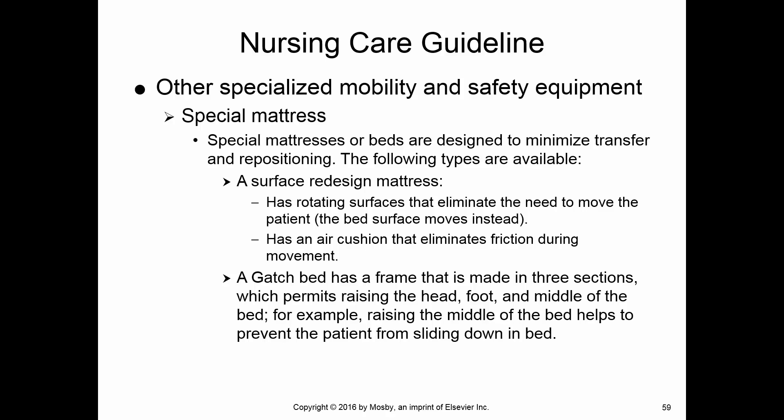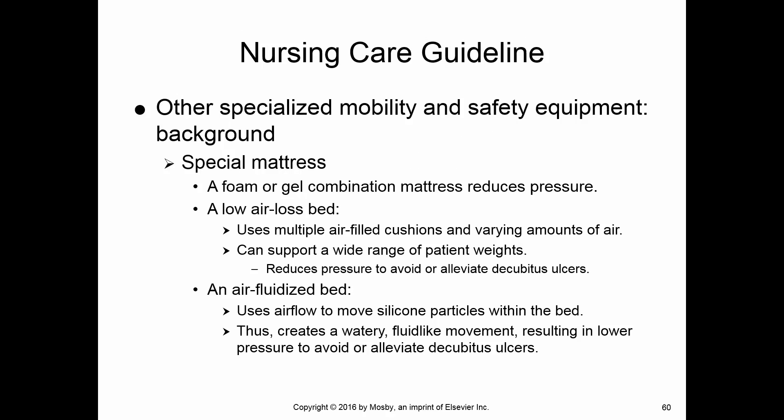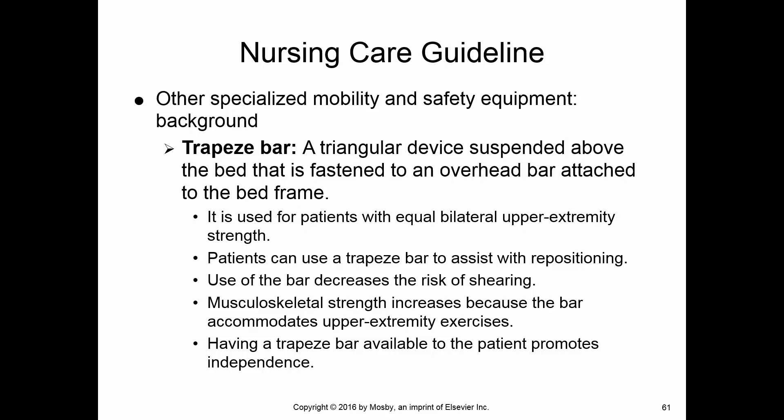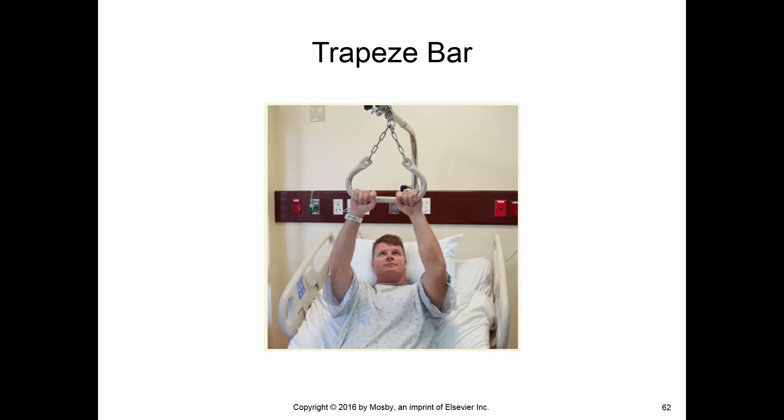Patients with mobility issues on continuous or prolonged bed rest may need a special mattress or special bed. Some beds come with a trapeze bar — for a person with upper extremity strength but compromised lower extremities, they can use the trapeze bar to help move themselves around in the bed.